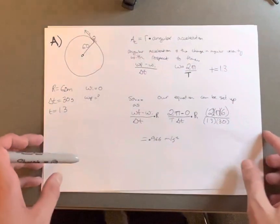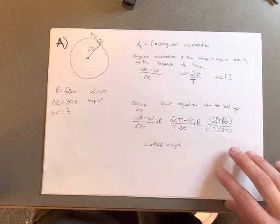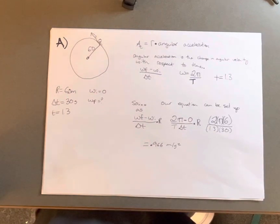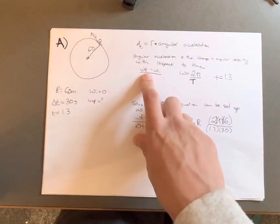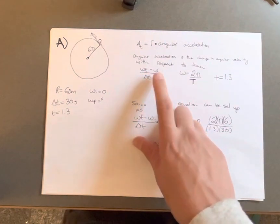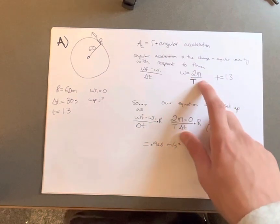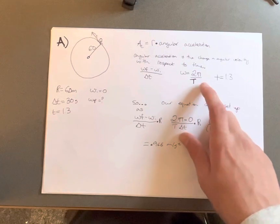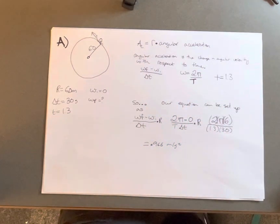Our tangential acceleration is going to be radius times angular acceleration. Angular acceleration is the change in angular velocity with respect to time, found with angular velocity final minus angular velocity initial over change in time. Our angular velocity is going to be 2π over t.